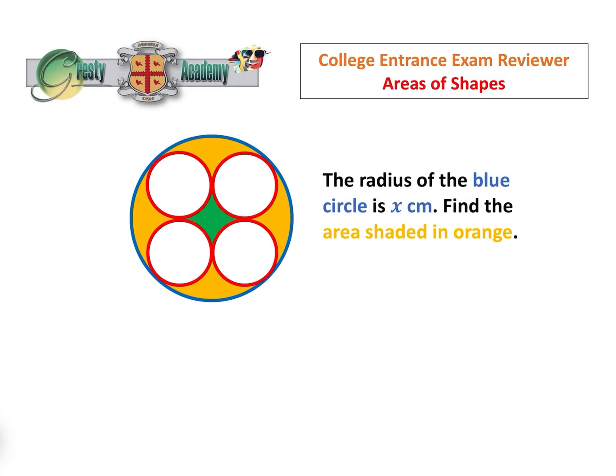There are two methods I'm going to show. The second one is slightly easier than the first. In the first traditional method, we will find the area of the blue circle, take away the four areas of the red circles, take away the green bit, and that leaves us with the orange bit. In the second method, slightly easier, we don't need to find the area of the green bit.